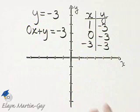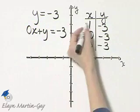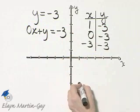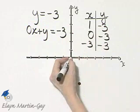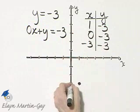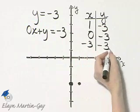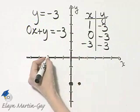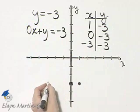Let's plot these ordered pair solutions. 1, negative 3, that's 1 to the right, 3 down. 0, negative 3, that's 0 left or right, 3 down. And negative 3, negative 3, that's 3 to the left, and then 3 down.